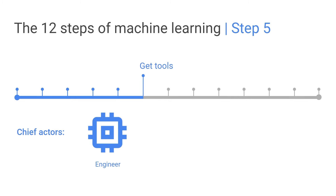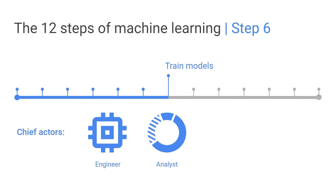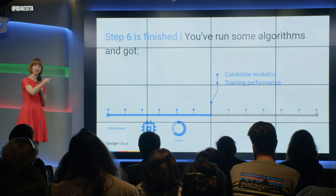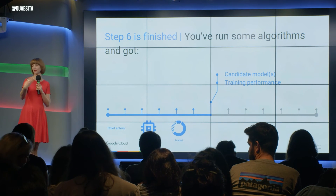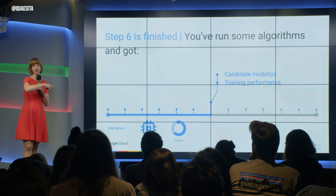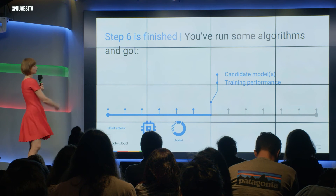Step 5: get some tools. Then step 6: actually train your models. Step 6 is finished when you've got your candidate models and you know how they performed on your training data. You expect that their performance in training is better than their performance elsewhere, so if they're not meeting your bar in training, don't proceed — keep on keeping on in here.